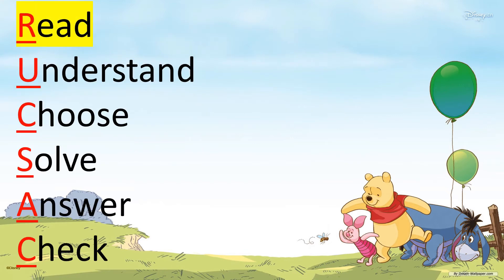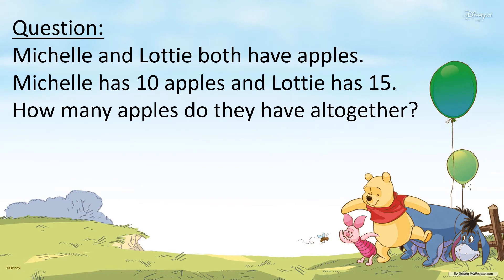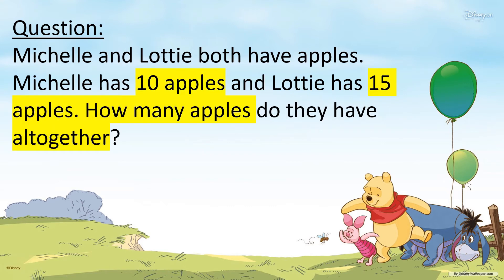Now we are going to do an example question. First, we need to Read. Michelle and Lottie both have apples. Michelle has 10 apples and Lottie has 15. How many apples do they have all together? When we read the question, we also need to underline or highlight the important phrases or numbers. The important pieces of information in this question are: 10 apples, 15 apples, how many apples, and all together. These phrases will help us solve the answer to this question.